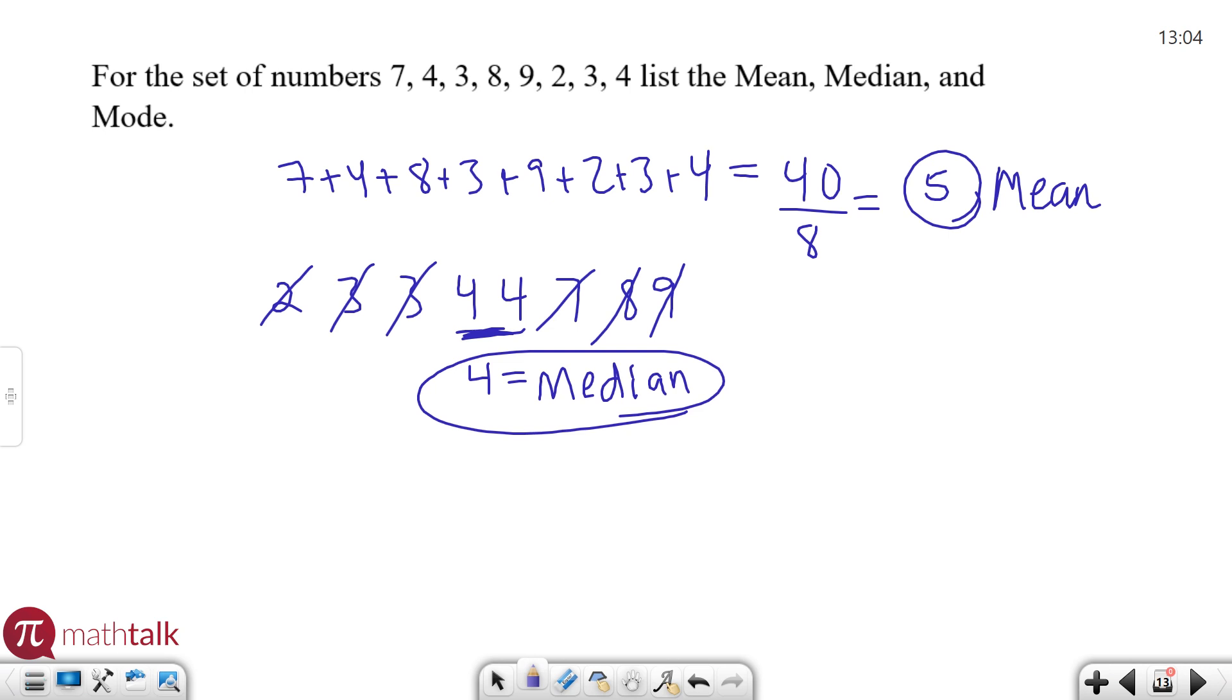Now the mode, which is the easiest of them in my opinion, is the most. Mode means most, which number occurs most often. In this case, there are actually two of them, which can happen. It is 3 and 4, because as you can see, there are two of each of those, and all the other numbers only occur once. So my modes, plural, are 3 and 4.